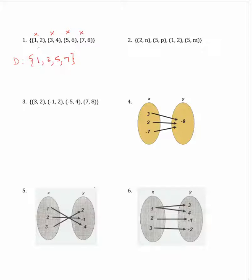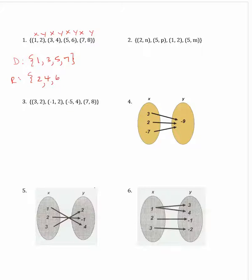The range corresponds to the y-coordinates. The y-coordinates are 2, 4, 6, and 8. So the range is the set of the numbers 2, 4, 6, 8. Now the domain does not repeat any of the x-coordinates, so this is going to be a function. A function cannot repeat x's.